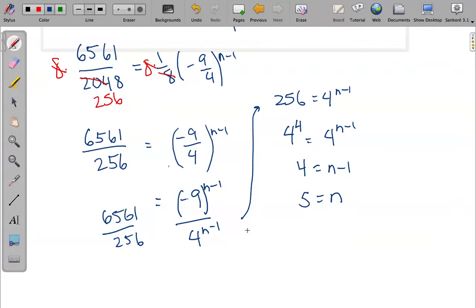Check it up here. I know that (-9)^(5-1), which is in parentheses, which is (-9)^4. If you throw that in your calculator, you realize that it is indeed 6561. So we know that there are 5 terms.